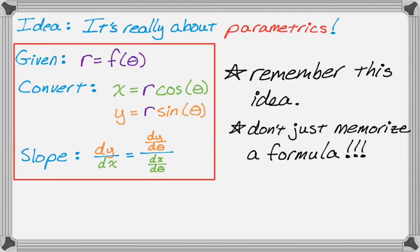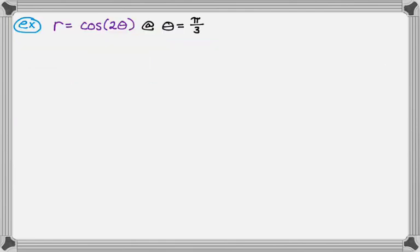Let's take a look at an example. We have r equals cosine of two theta, and we want to find the slope at theta equals pi over three. The slope of a polar curve is still dy/dx, because we graph polar curves in the xy plane — we're just using a different system of measuring coordinates.